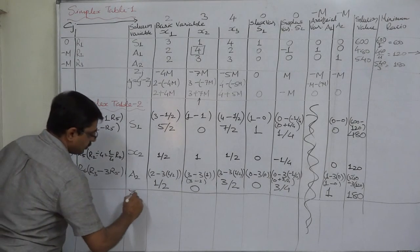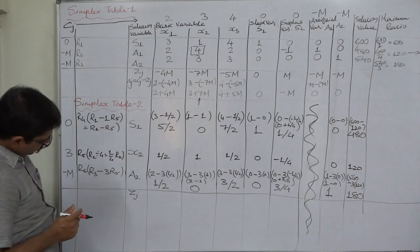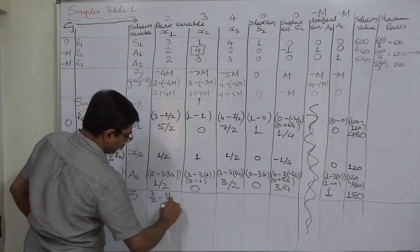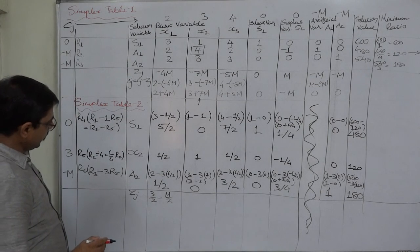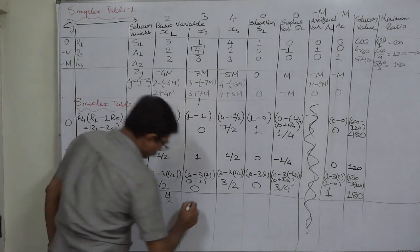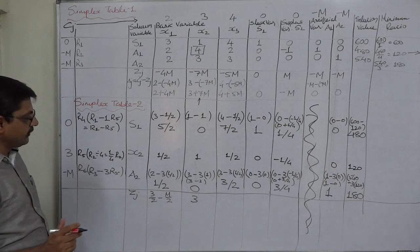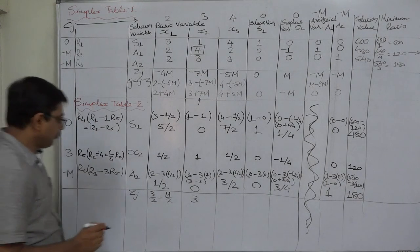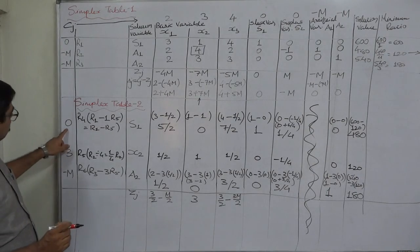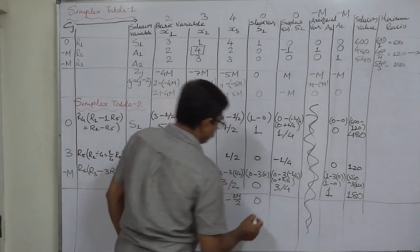Now, Zj values. 0 into 5/2 = 0. 3 into 1/2 = 3/2 and minus M into 1/2 = minus M/2. So the summation is 3/2 minus M/2. Next column: 0 into 0 = 0, 3 into 1 = 3, minus M into 0 = 0. So Zj = 3. Next: 0 into 1/2 = 0, minus M/2, minus 3M/2. Next: 0 into 1 = 0, 3 into 0 = 0, minus M into 0 = 0. So 0.